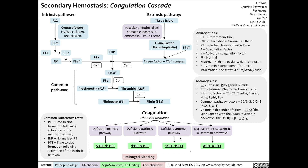Deficiencies in the common pathway involving factor 10, factor 5, factor 2 (prothrombin), and factor 1 (fibrinogen) will result in elevation of both the prothrombin time and the partial thromboplastin time. Elevations in any of these common laboratory tests signify prolonged bleeding.